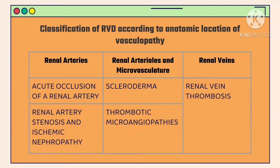The classification of renal vascular disease is according to anatomic location of vasculopathy. There are three main anatomic locations: the renal arteries, the renal arterioles and microvasculature, and the renal veins. Under renal arteries, we have acute occlusion of a renal artery and renal artery stenosis with ischemic nephropathy. Under arterioles and microvasculature, we have scleroderma and thrombotic microangiopathies. Under renal veins, renal vein thrombosis.